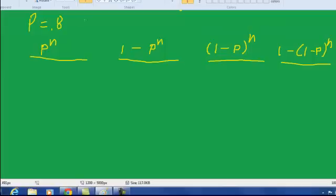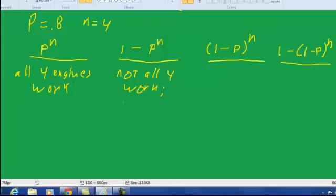So in the case of our bomber, n is equal to 4. So what this means, this gives us the probability that all four engines work. So all four engines succeed. That's 0.8 times 0.8 times 0.8 times 0.8. Now 1 minus p to the n means not all four work. So that means at least one fails. Now that could be an interesting answer to some types of problems. It just doesn't happen to be the answer to this problem.